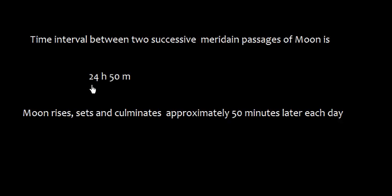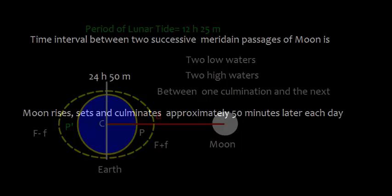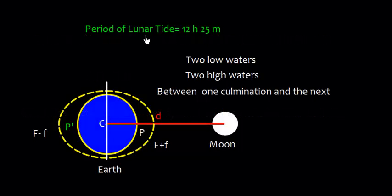We also know that the time interval between two successive meridian passages of moon is 24 hours 50 minutes. This is a known fact that the moon rises, sets, and culminates approximately 50 minutes later each day. So we can say that the period of lunar tide is half of that, that is 12 hours 25 minutes.